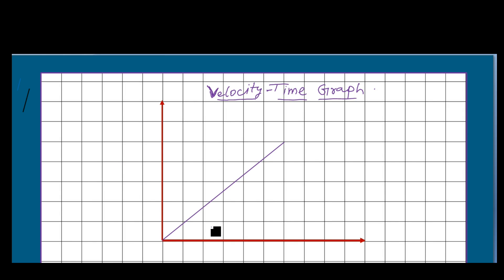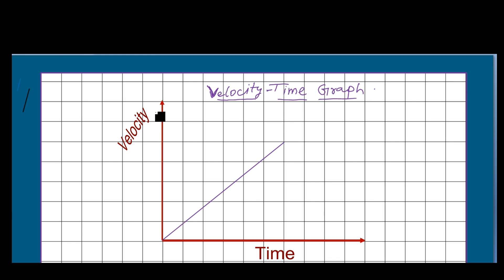Before this video I explained about the displacement-time graph. Right now in this video I will explain about the velocity-time graph. I am showing here a graph — this is the y-axis, positive y-axis, and this is the positive x-axis. This is the origin, as usual you know this.